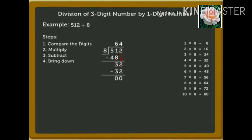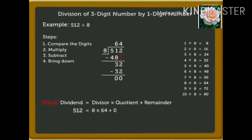Now it is time to check our calculation using the following relation: Dividend equals divisor times quotient plus remainder. 512 equals 8 times 64 plus 0, that is 512 plus 0. So, here we get 512 equals 512. Hence, our division is correct.